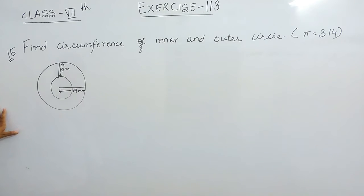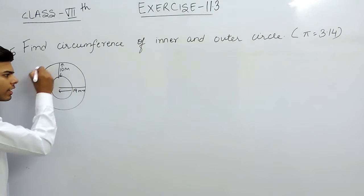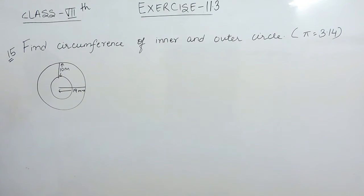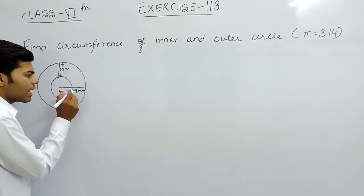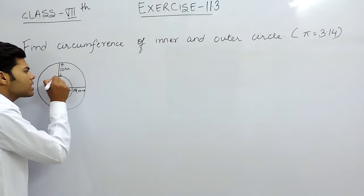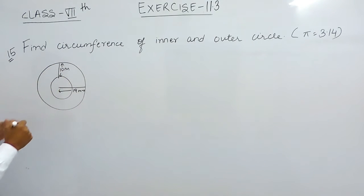So basically what is a concentric circle is that their center is the same. This is the center of this circle and this is the center of the bigger circle also. We are given the radius of this bigger circle is 19 meters and this part that is also circular is of 10 meters.